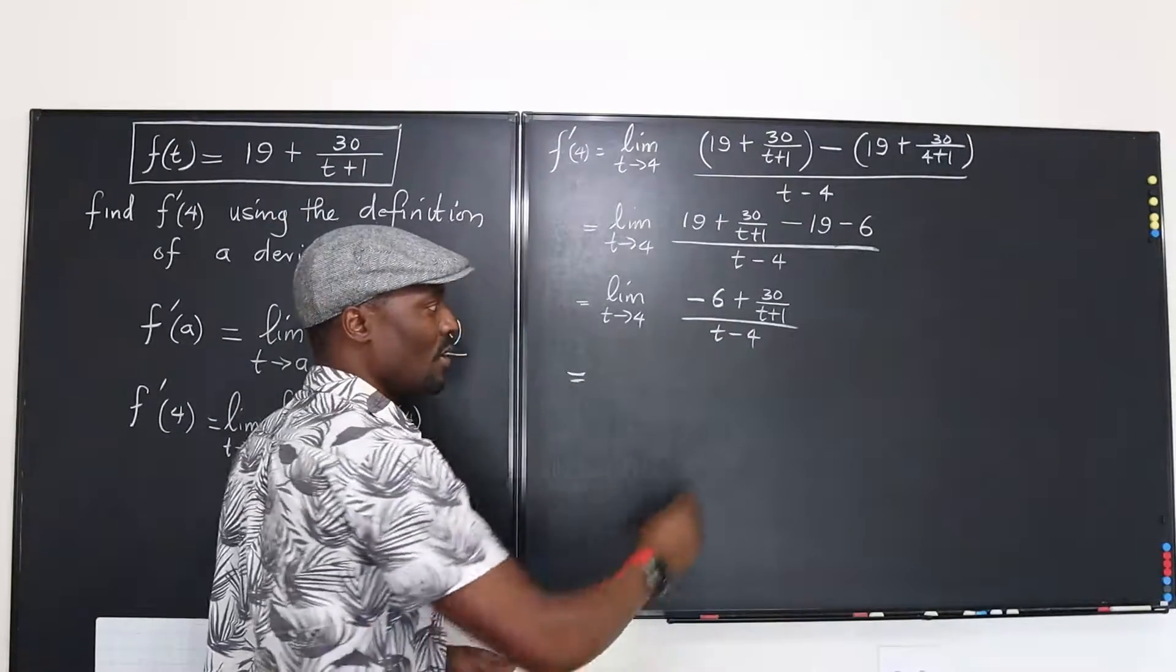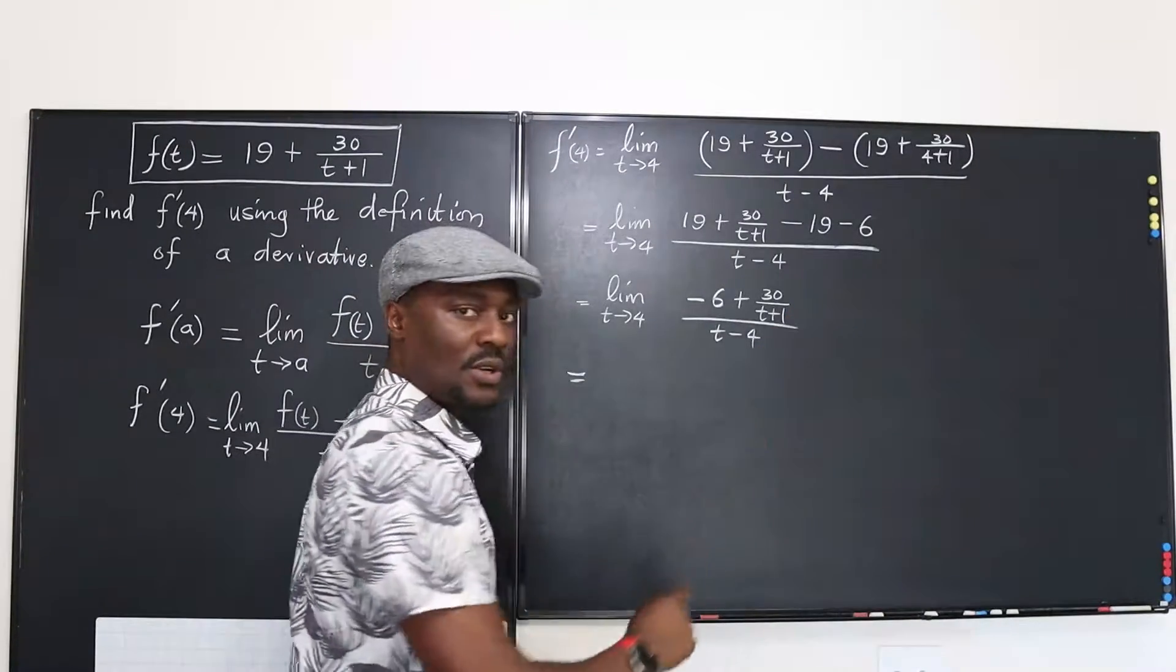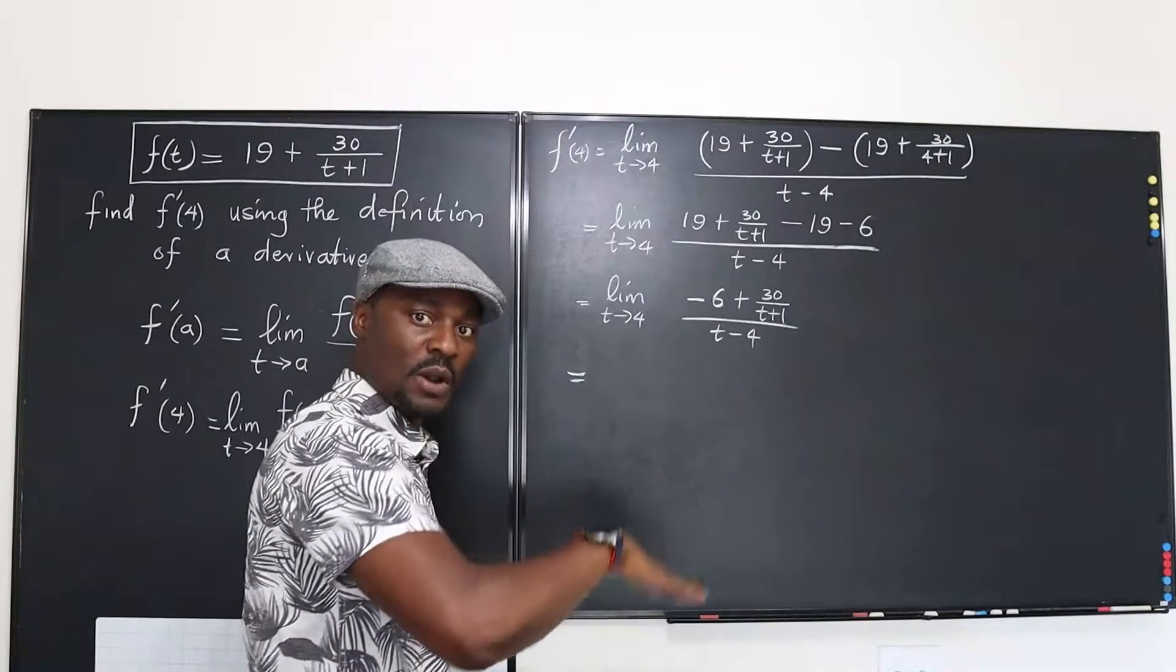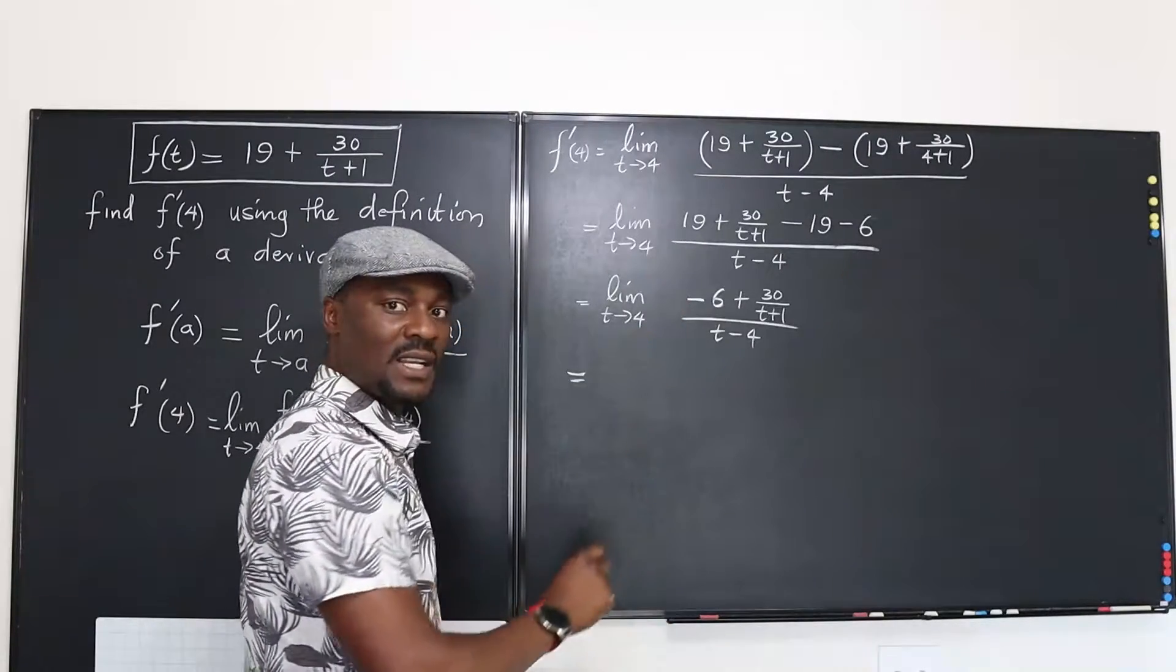Now what's the next stage? We're going to try and get rid of this fraction on top, this denominator on top. We want to bring it down, but this guy is standing alone.